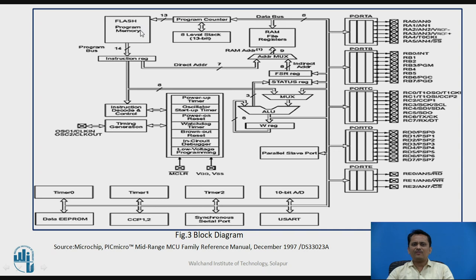To access 8K program memory locations, a 13-bit address is required, which is always held in the Program Counter register. An important feature is the stack memory, which in the PIC microcontroller is neither part of program memory nor data memory — it is an 8-level hardware stack.